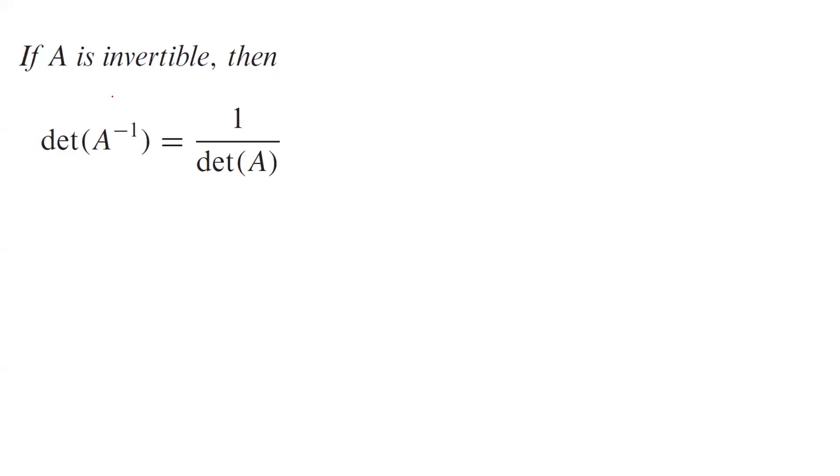Suppose you have an invertible matrix, then you want to show that the determinant of the inverse of A is equal to 1 over determinant of A, or equivalently, that the multiplication of determinant of A and the determinant of the inverse is equal to 1.